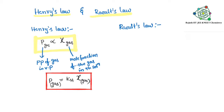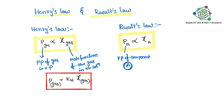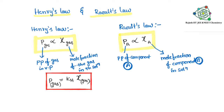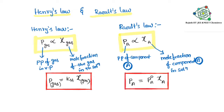Now coming to Raoult's law. Here I am taking component A which is volatile — don't forget that. PA, the partial pressure of component A which is volatile, is directly proportional to the mole fraction of component A in the solution. Removing the proportionality, PA = P°A × χA. This is the mathematical representation of Raoult's law. How P°A is derived, I will explain in coming classes.